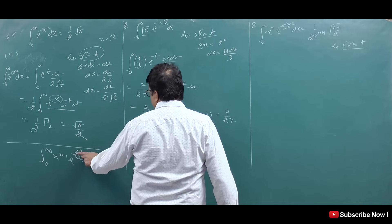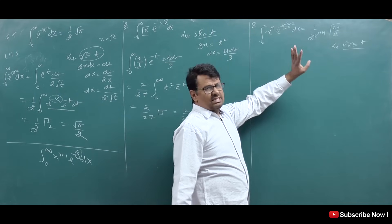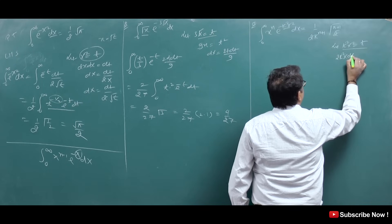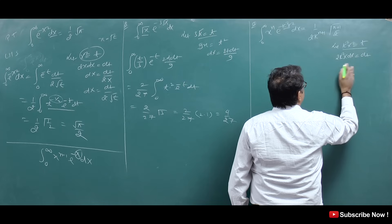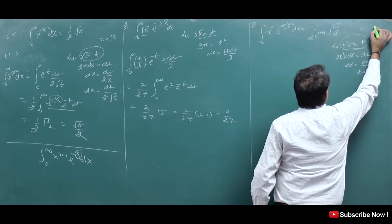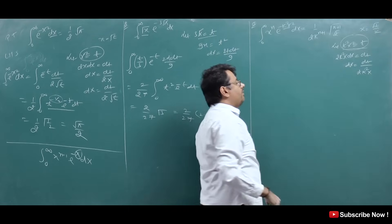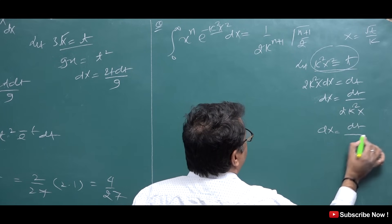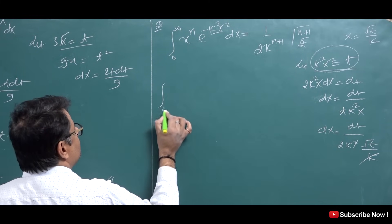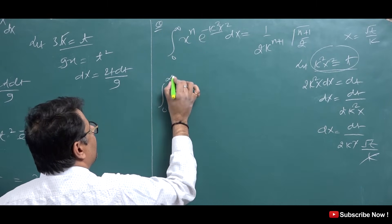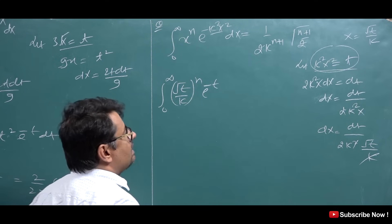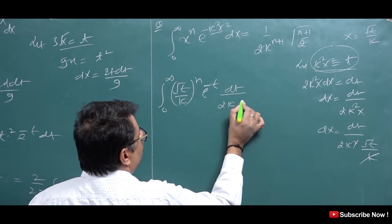For the general question, let k²x² = t, so 2k²x dx = dt, meaning dx = dt/(2k²x). From the substitution, x = √t/k. Substituting: dx = dt/(2k²·√t/k) = dt/(2k√t). The limits remain 0 to ∞. So x^n = (√t/k)^n, and the integral becomes ∫₀^∞ (√t/k)^n · e^(−t) · dt/(2k√t).